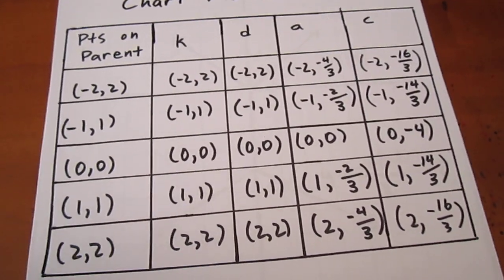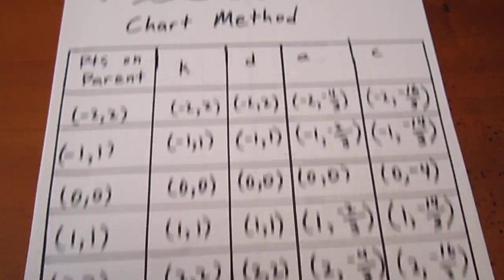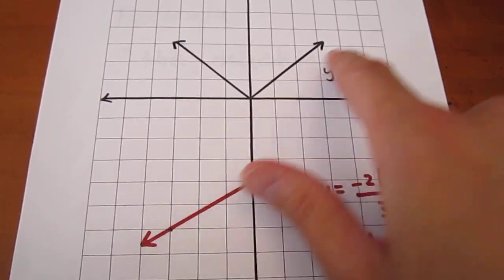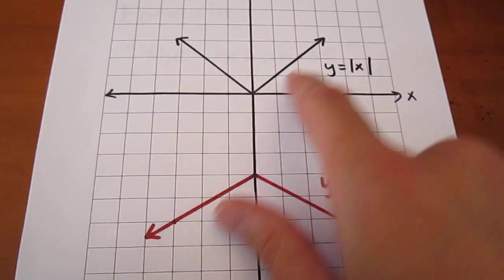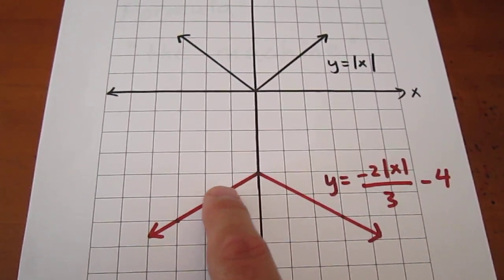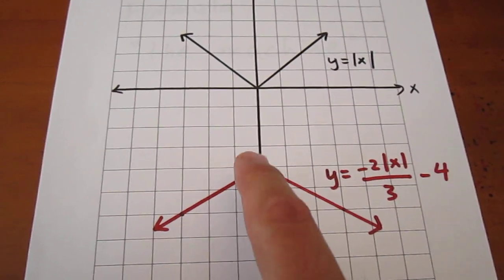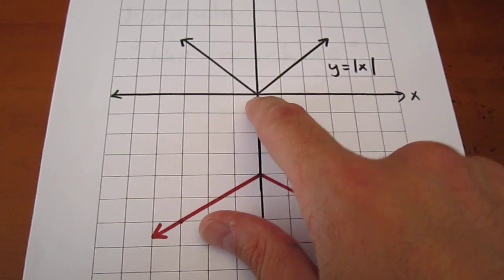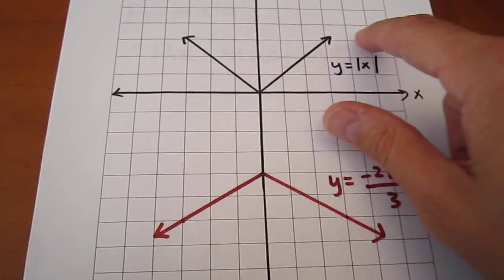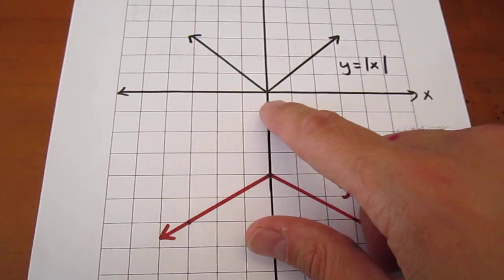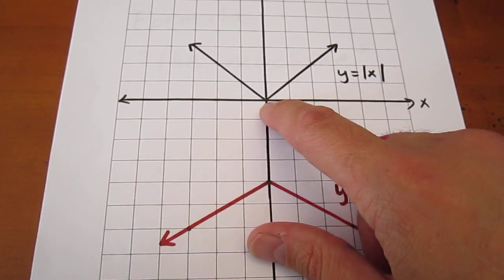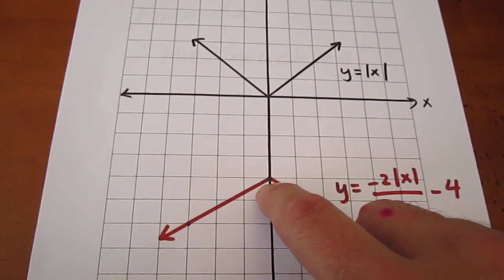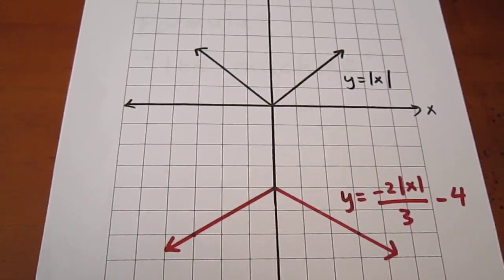We can then simply graph this curve — plot those points as well as our parent function. When we graph the parent curve and then graph the other points, we see that the nature of this curve is to begin at the origin and graph through, with straight lines, all the other points. We do the same thing: the image of the origin is here, and we graph through the other points with straight lines.